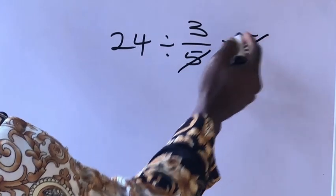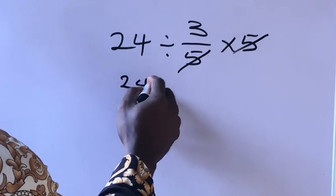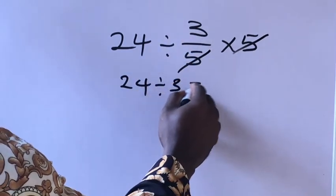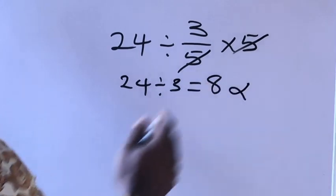This 5 cancel this 5. 24 divided by 3 which is equal to 8, but this answer is not correct.